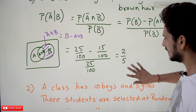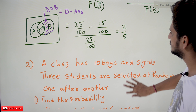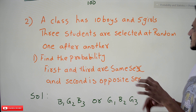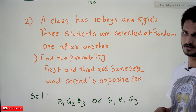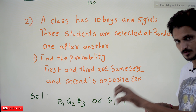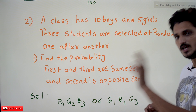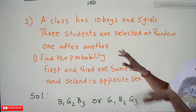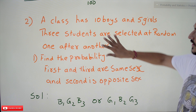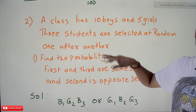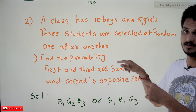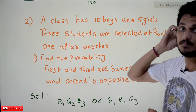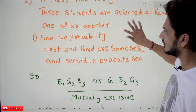Now coming to the next question: a class has 10 boys and 5 girls. Three students are selected at random, one after another. They did not mention replacement, so we assume no replacement — meaning these are dependent events.